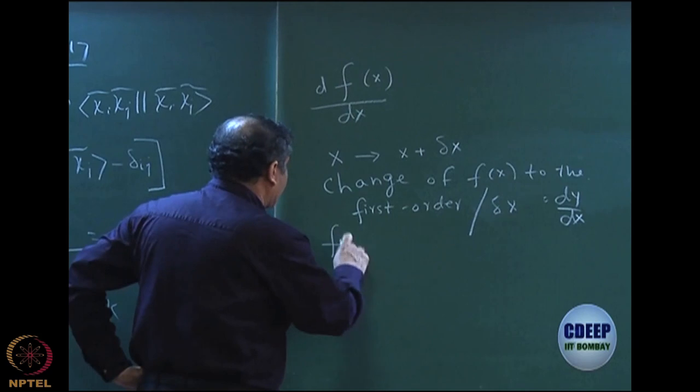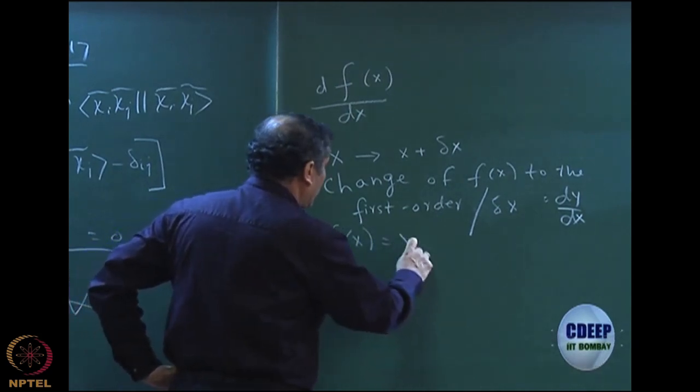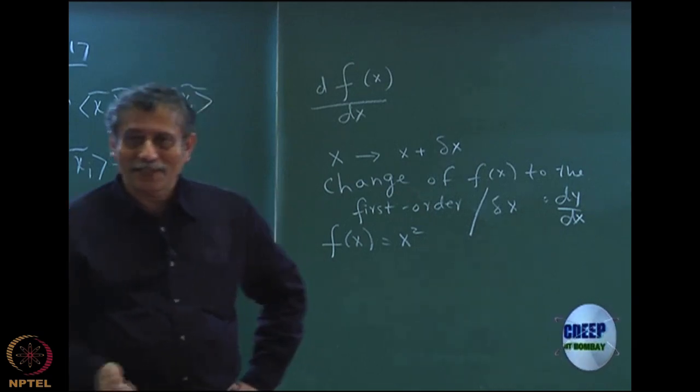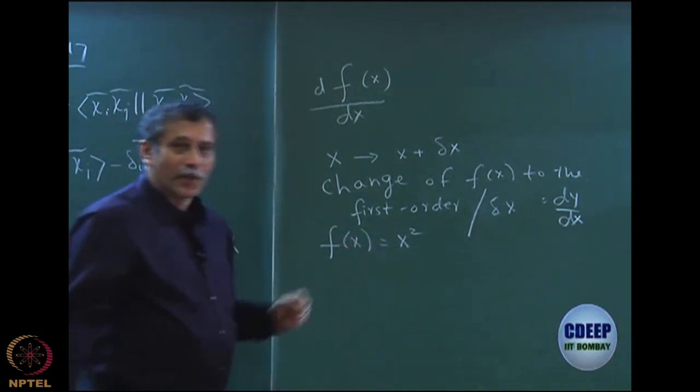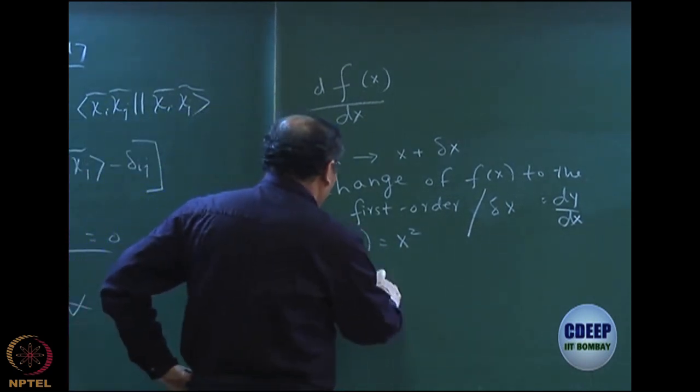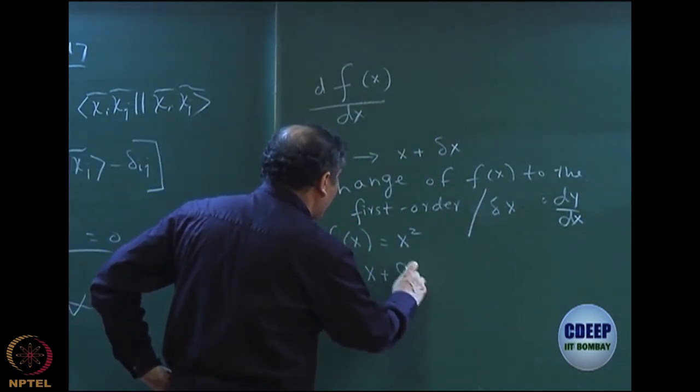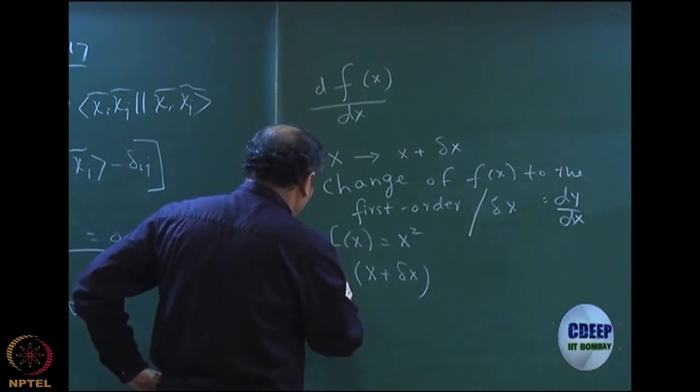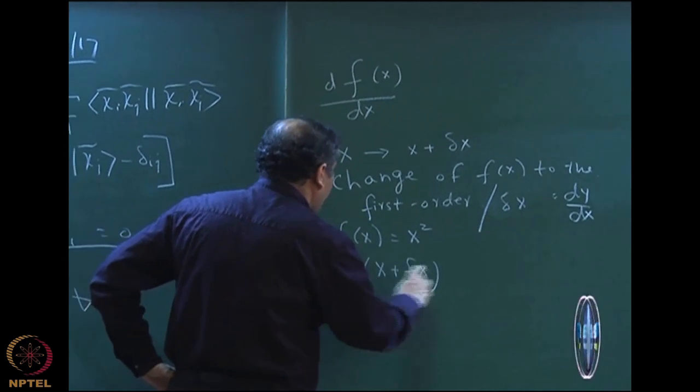Actually, you can quite easily see. Let us say f of x is x square. Now, I am doing very elementary algebra. Let us say f of x equal to x square. You know of course df dx, that is 2x. I am going to find it. How do I find it? I make x to x plus delta x. What is the total f of x, new f of x? New f of x plus delta x is x plus delta x whole square. So, that is the new function.